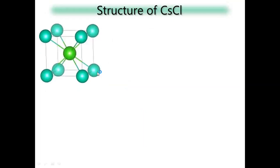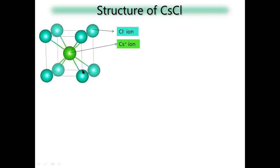The structure of cesium chloride: cesium chloride follows BCC structure. At the center, we have the cesium atom and the corners are Cl⁻ ions. Cl⁻ is the sphere, and at the center we have Cs⁺ which is a void. This void is the cubic void, present at the body center of BCC structure, with a radius ratio of 0.732 to 1.